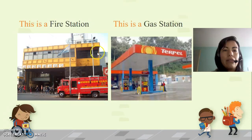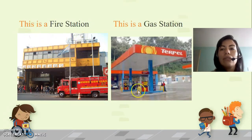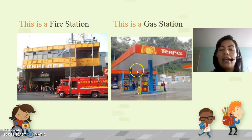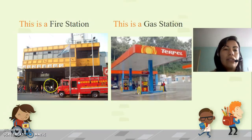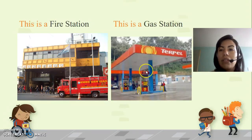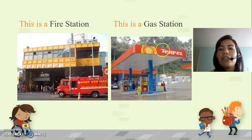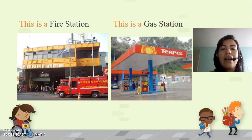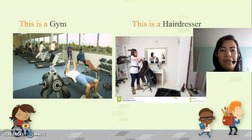What is this? This is a fire station. What is this? This is a gas station. Entonces tenemos la estación de bomberos y la gasolinería. For example, here in Colombia we have Terpel, and it's near here in Suba.